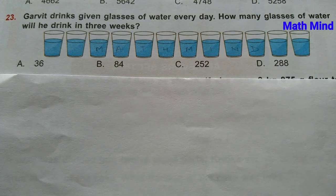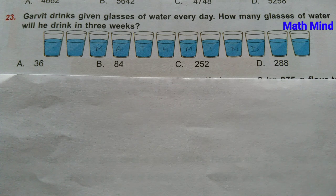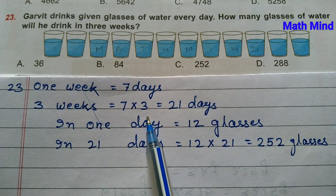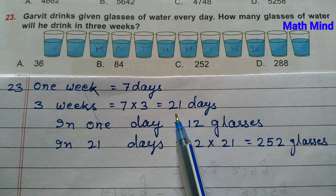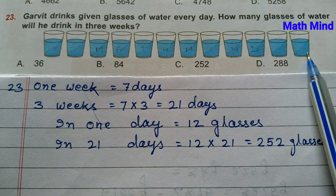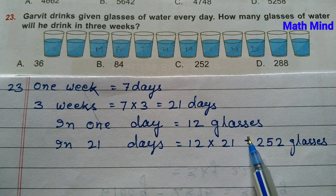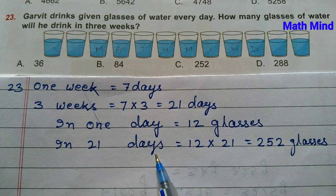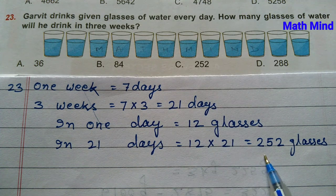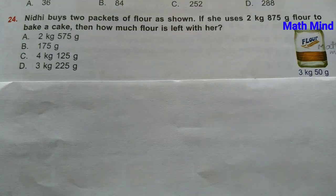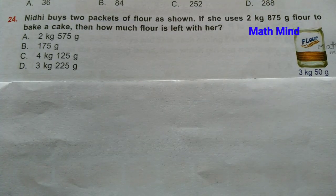Question number 23: Garvit drinks a given number of glasses of water every day. How many glasses will he drink in 3 weeks? 1 week equals 7 days, so 3 weeks equals 21 days. Counting the glasses in the image, there are 12 glasses. So in 1 day he drinks 12 glasses; in 21 days he drinks 12 into 21 equals 252 glasses. Option C is correct: 252 glasses.